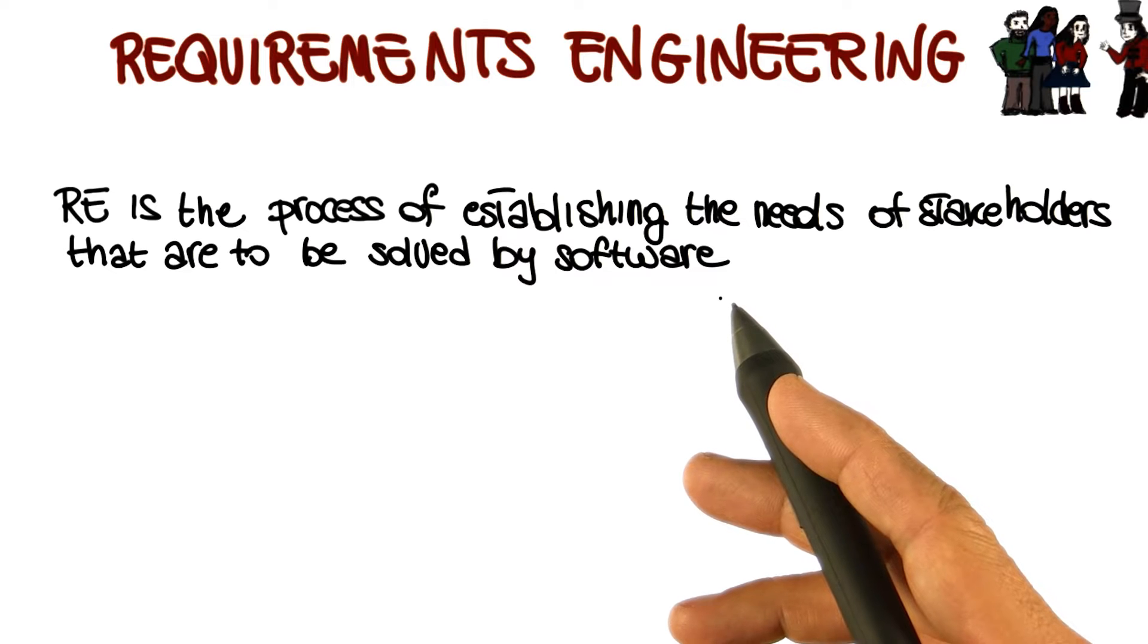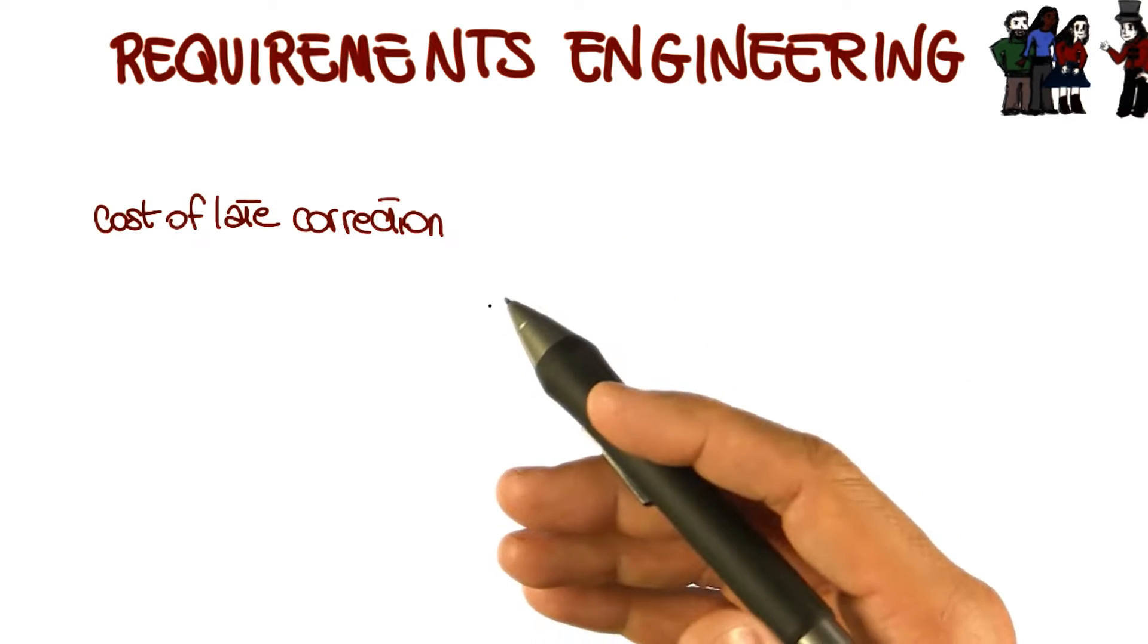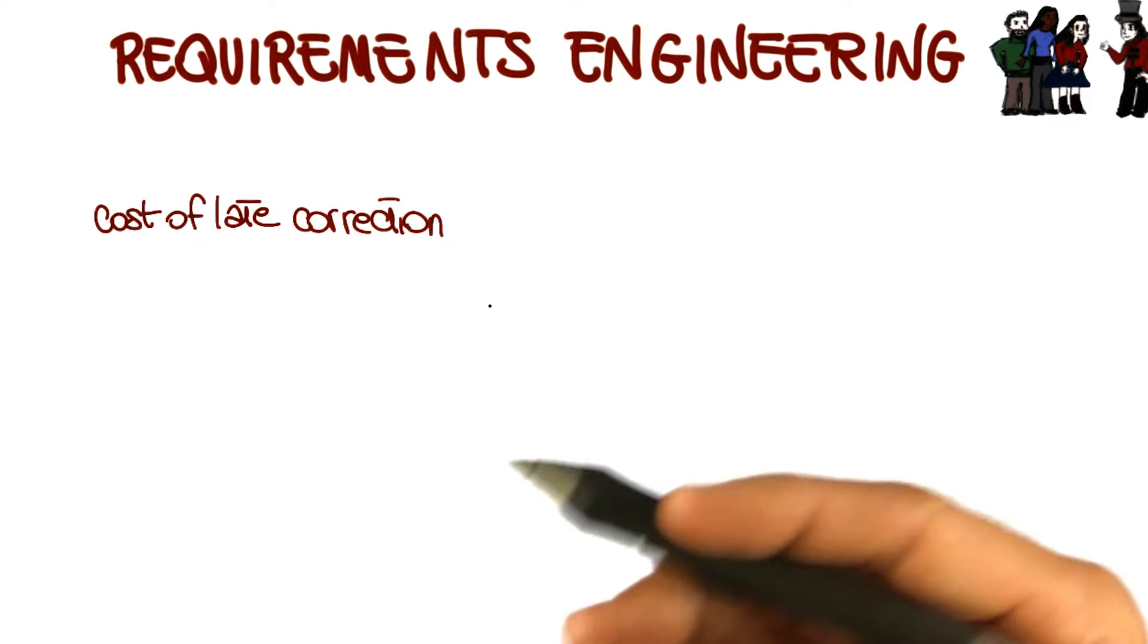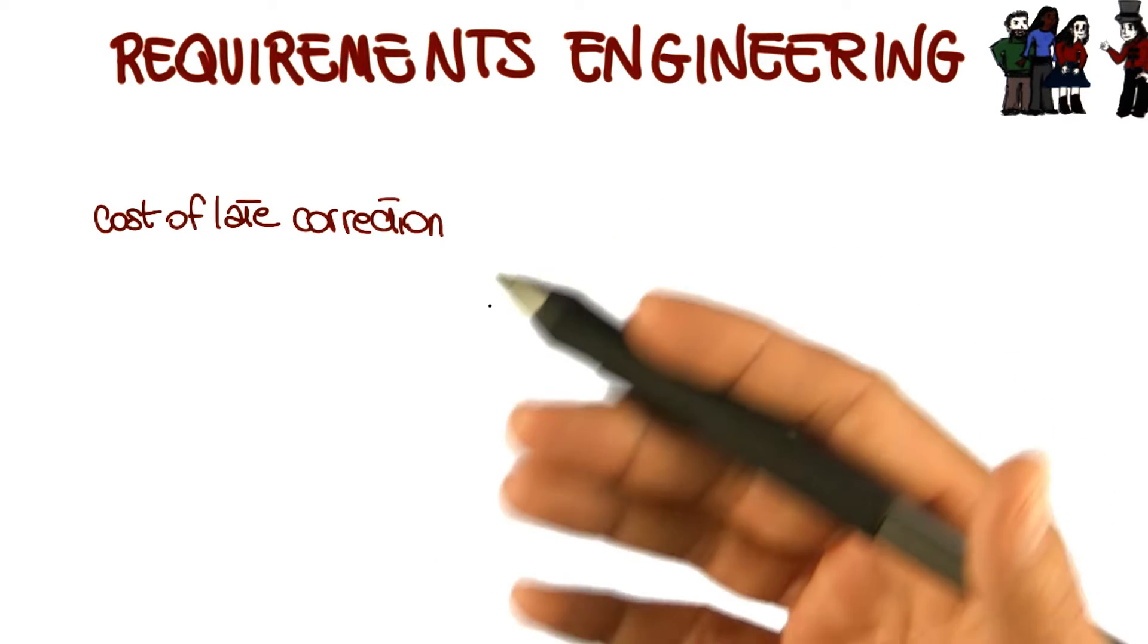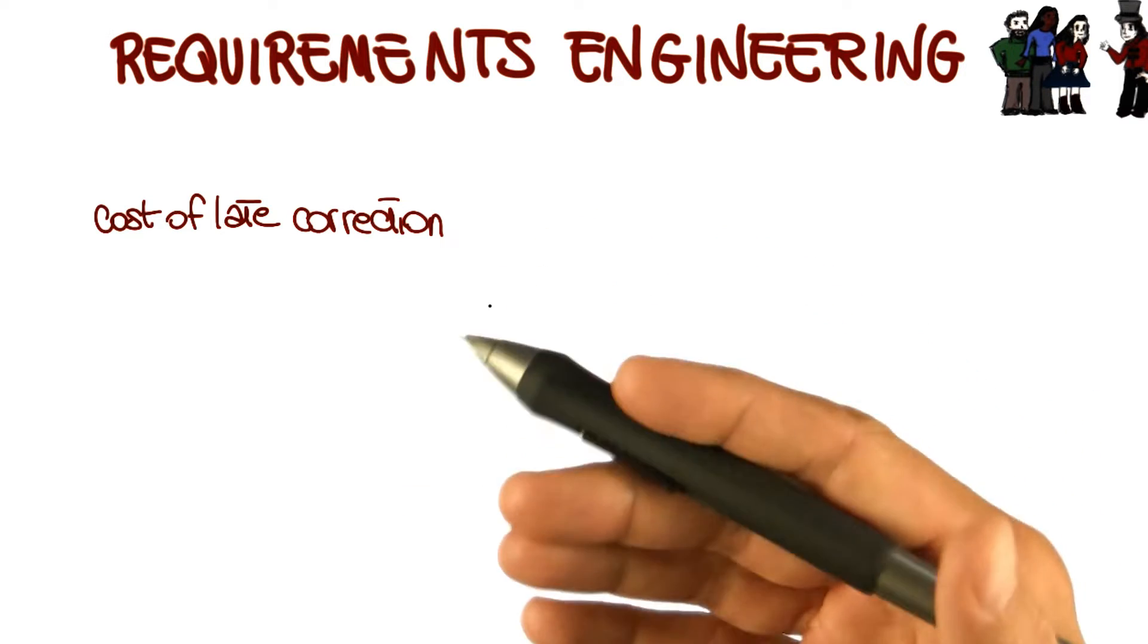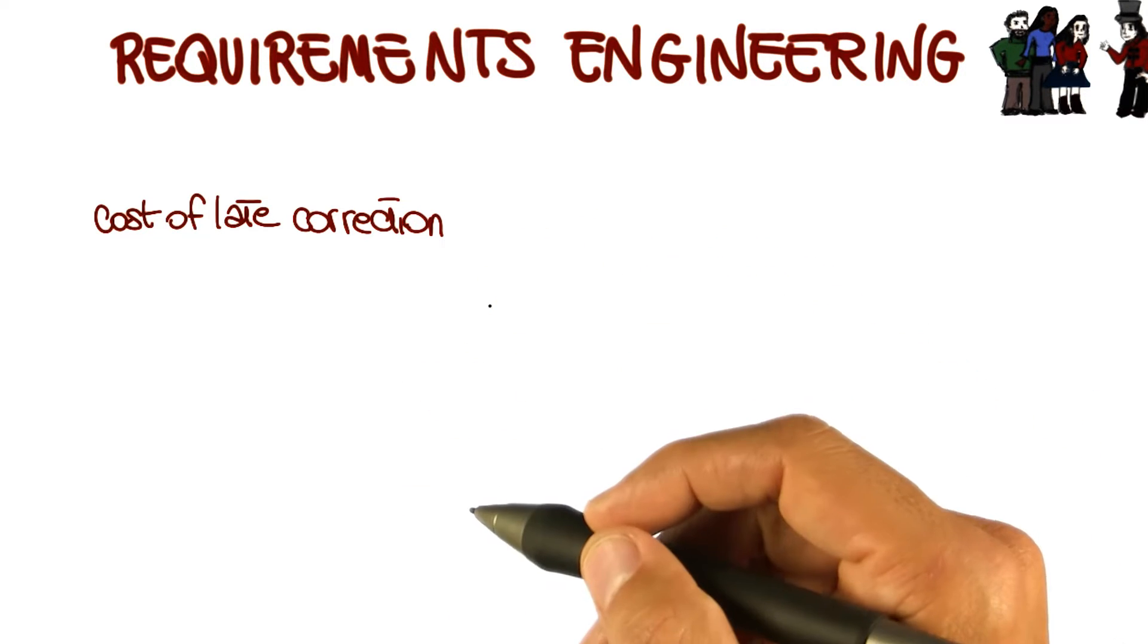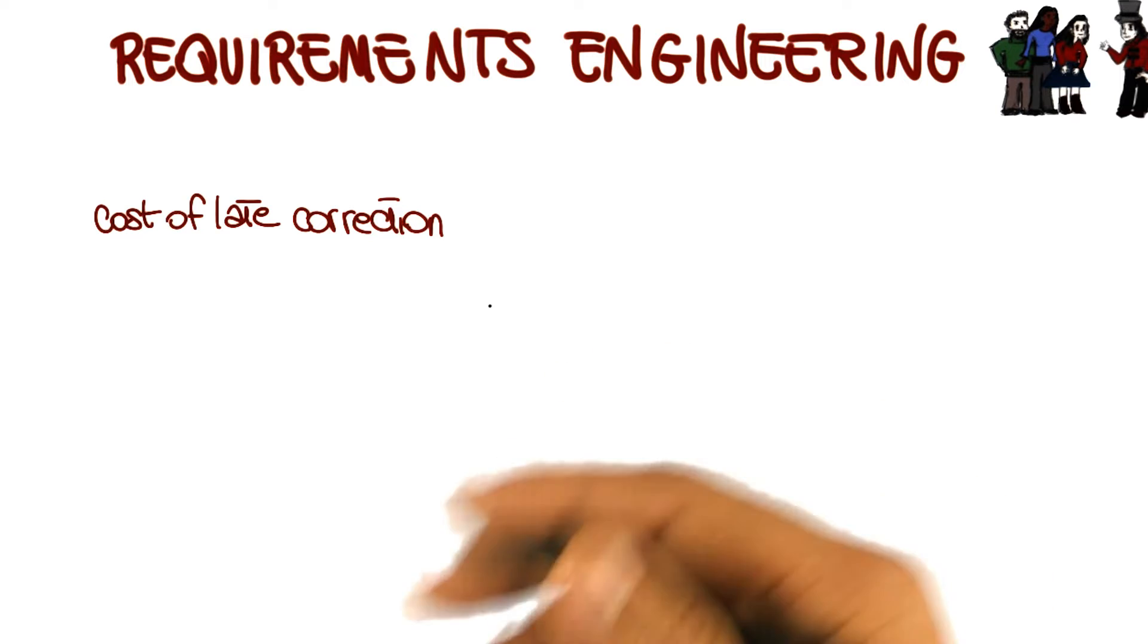So why is this phase so important? In general, the cost of correcting an error depends on the number of subsequent decisions that are based on it. Therefore, errors made in understanding requirements have the potential for greatest cost because many design decisions and follow-up decisions depend on them.